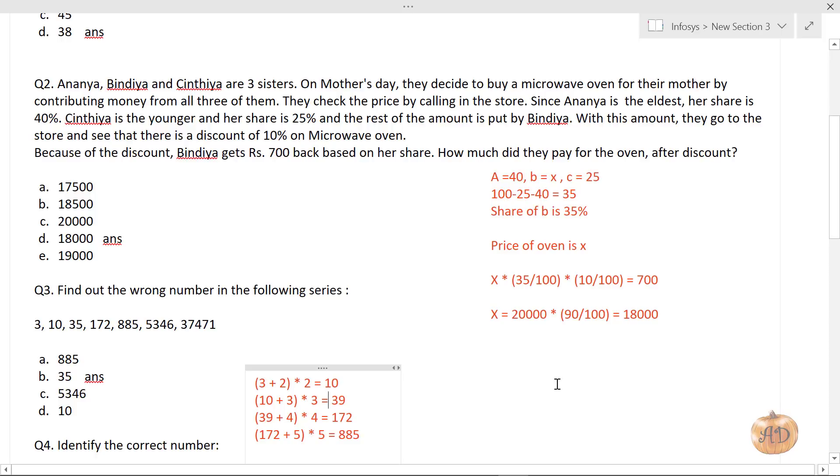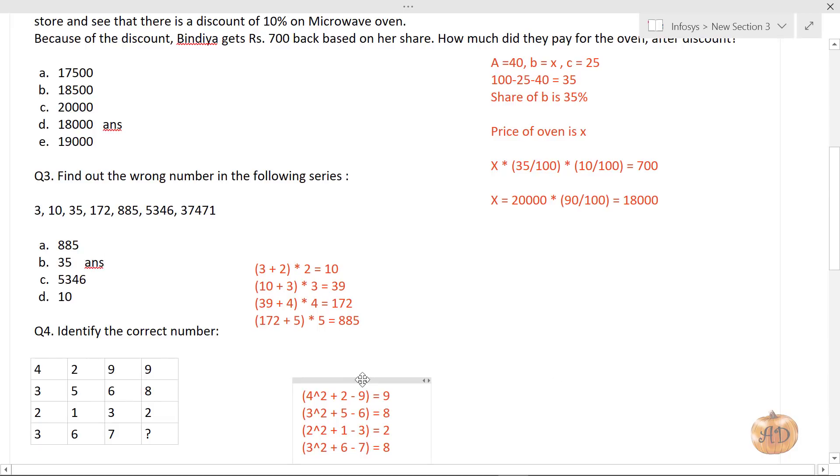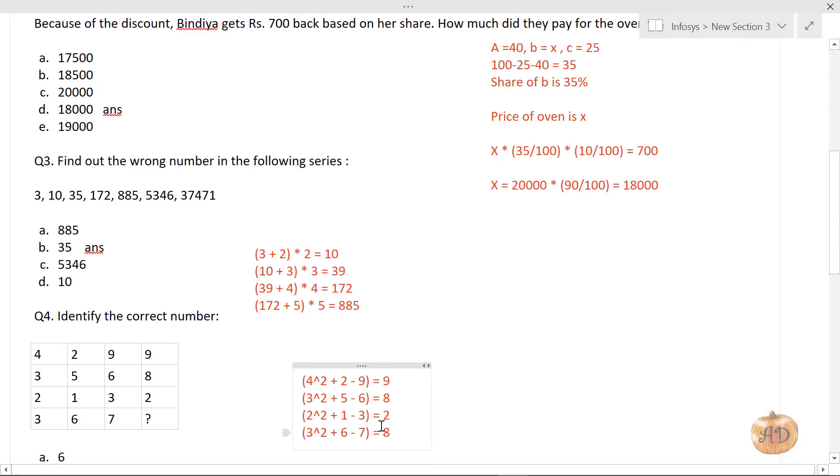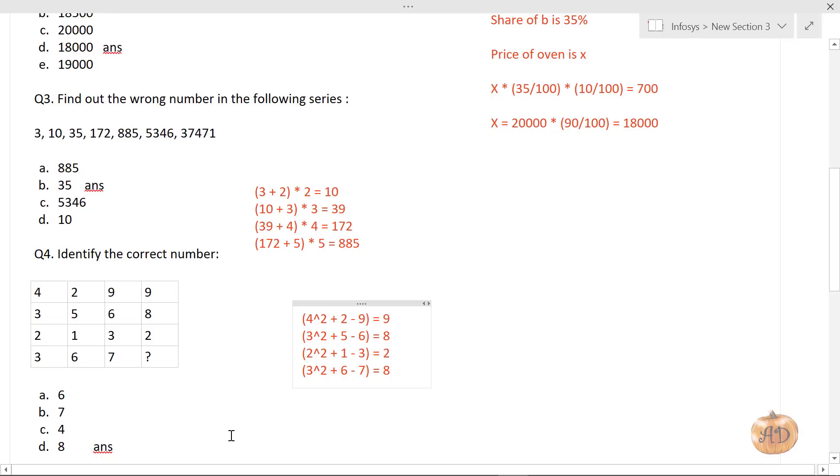For the next question, I've saved the equation to save time. We have to identify the correct number. After looking at the series, I found the exact pattern: square the first element, add the second element, subtract the third element. Like 4² + 2 - 9 = 9. Similarly, second row: 3² + 5 - 6 = 8. For the last row: 3² + 6 - 7 = 8. So the correct option is 8.